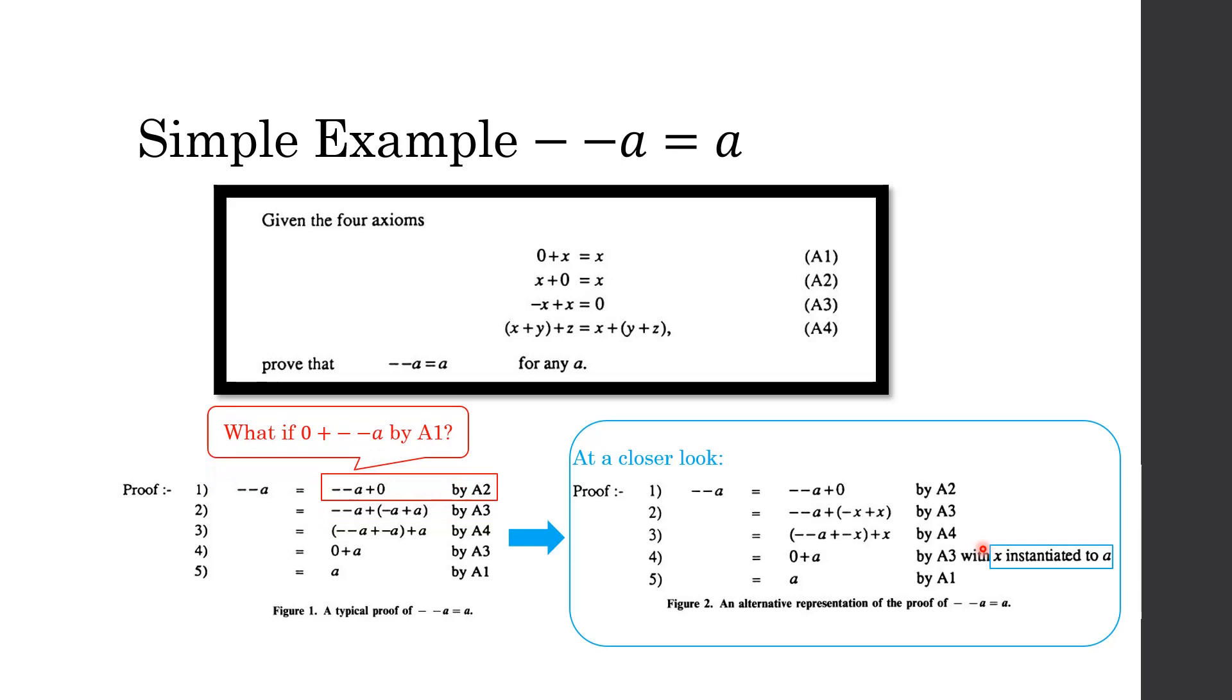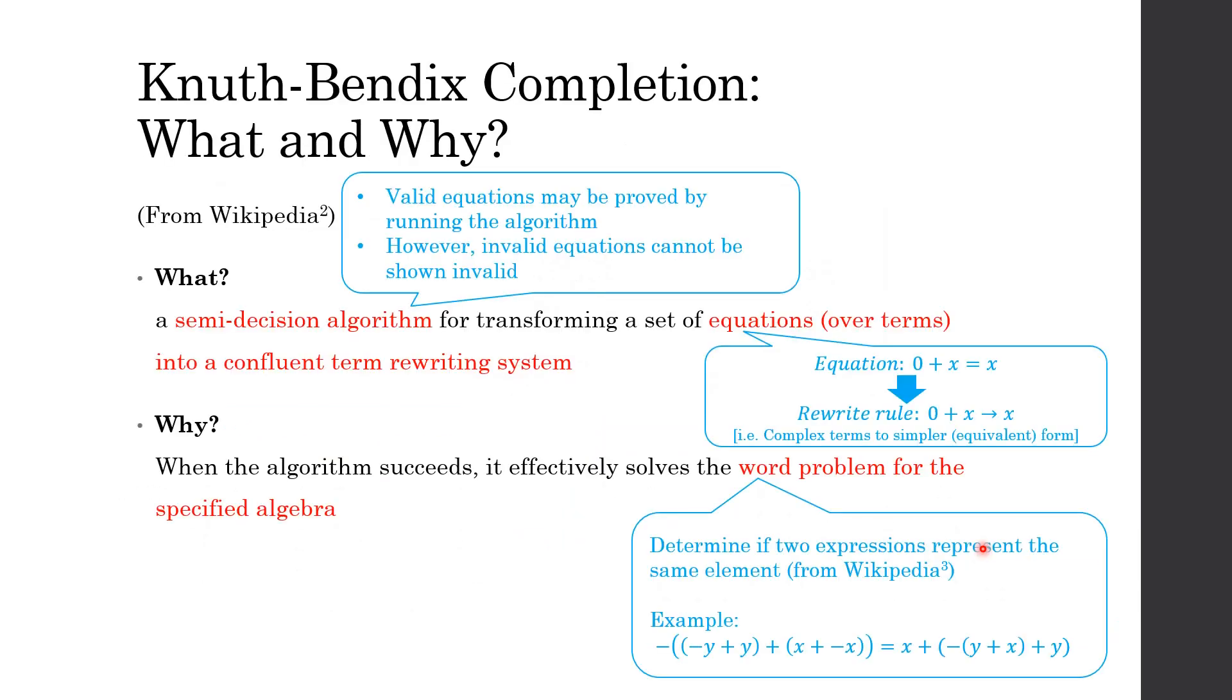But what if we don't start with A1, we start with A2. So -(-a) = 0 + -(-a). So what will this cause? This will cause the whole proof to look different. And what if we have a more complicated equation instead of -(-a) = a, we have an equation as complicated as the previous slide.